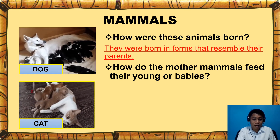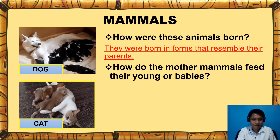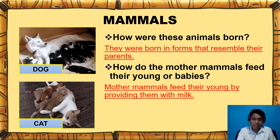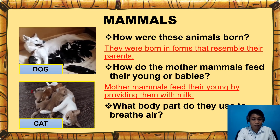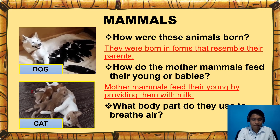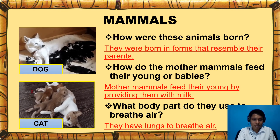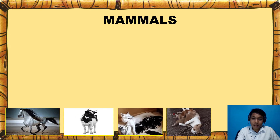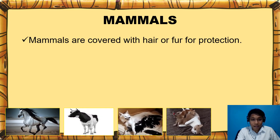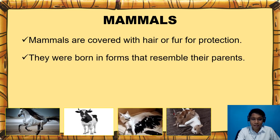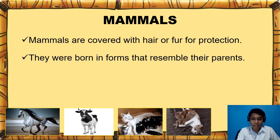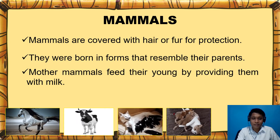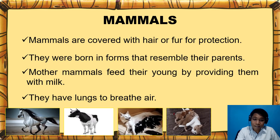How do mother mammals feed their young or babies? Mother mammals feed their young by providing them with milk. What body part do they use to breathe air? They have lungs to breathe air. Always remember that mammals are covered with hair or fur for protection, born in forms that resemble their parents, feed their young with milk, and have lungs to breathe air.